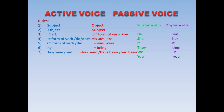We are done with 7 rules so far: subject becomes object, object becomes subject, third form of verb plus 'by'; if first form of verb or 'do/does' — use 'is/am/are'; second form or 'did' — use 'was/were'; 'ing' — use 'being'; 'has/have/had' — use 'has been/have been/had been'. Now let's see rule number 8.